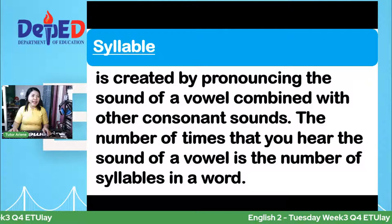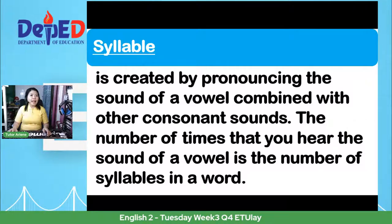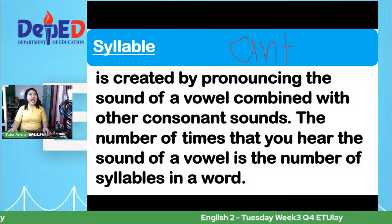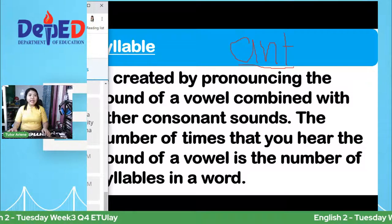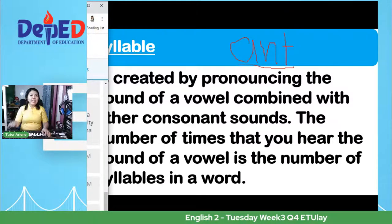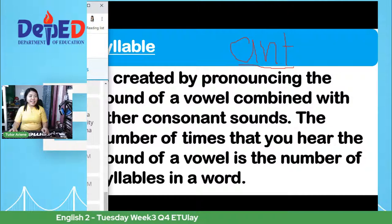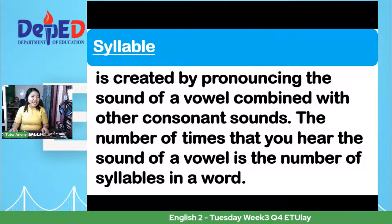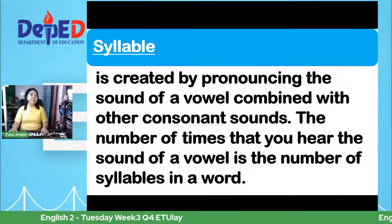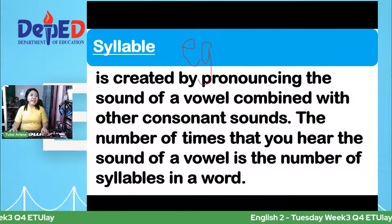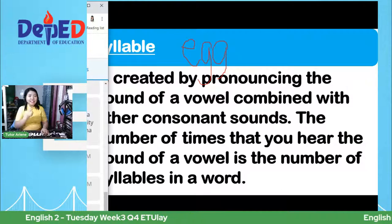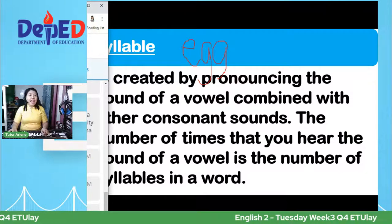For example, the word 'ant.' How many syllables do we have? There is only one vowel and two consonants, so we have one syllable only. Say it: ant. Next, the word 'egg.' How many syllables do you see? We only have one syllable — that is egg. You can see that this word has one syllable.